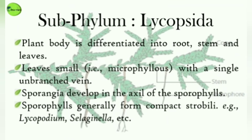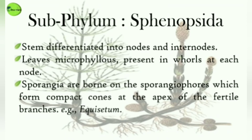Next is Lycopsida. The plant body of Lycopsida is differentiated into roots, stem, and leaves. Their leaves are small with a single unbranched vein, so they are known as microphylls. Their sporangia develop in the axils of the sporophylls, and these sporophylls generally form compact strobili. Examples include Lycopodium.